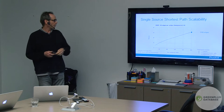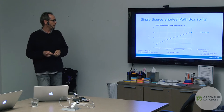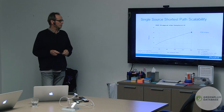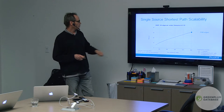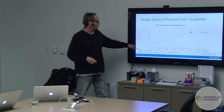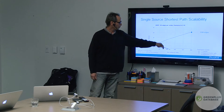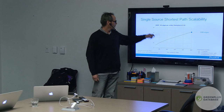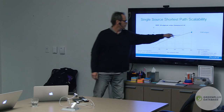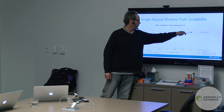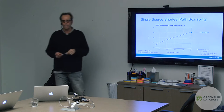Here's an example for a graph algorithm called single source shortest path. It shows that with 500,000 vertices and 100 edges per vertex — about 50 million edges — you can run shortest path in about 50 seconds.